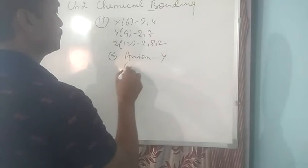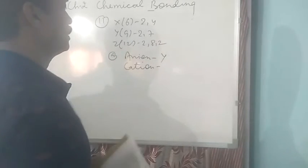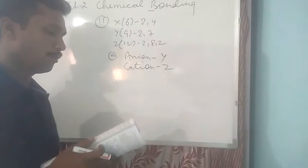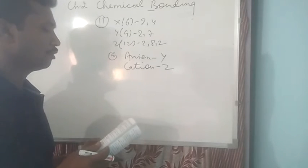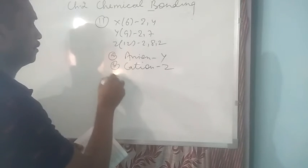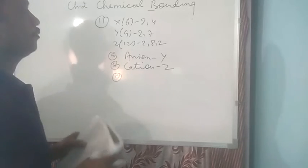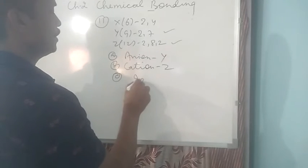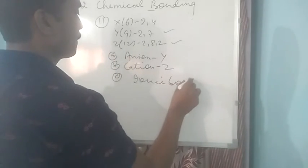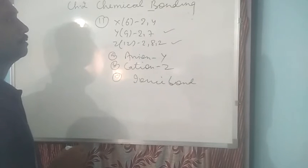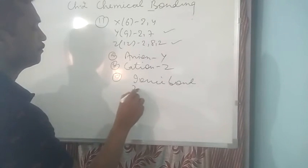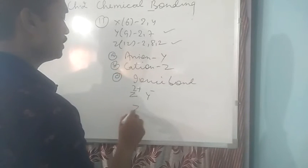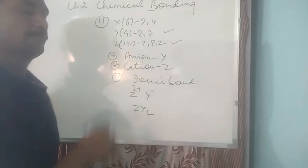Then cation, which can lose electron and can form positive charge. It will be Z. Now state type of bond between Y and Z and give its molecular formula. So type of bond between Y and Z, because Y is a non-metal, Z is a metal. So bond will be ionic bond. And formula we can write. Since Z is a metal, metal should be written first with two positive charge. And Y will have one negative charge. And the compound will be ZY2. This is the formula of the compound formed.